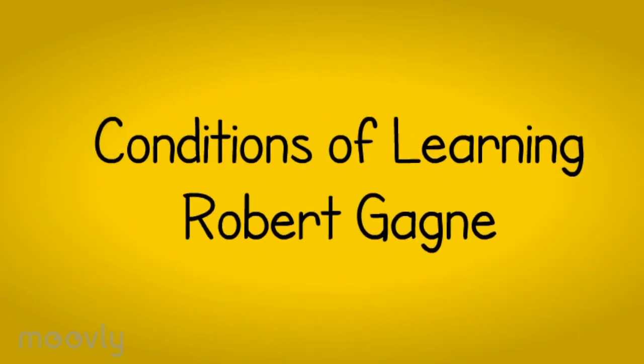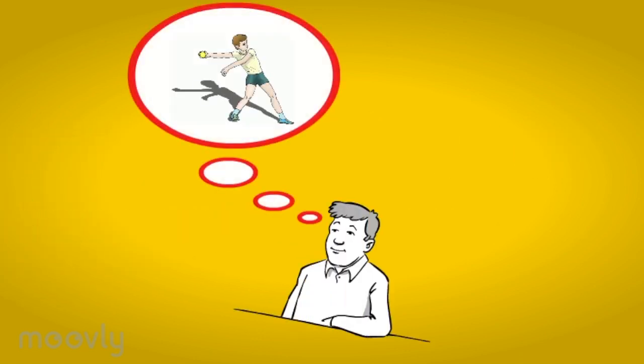The Conditions of Learning by Robert Gagne. You've probably never thought about how someone learns to throw a ball, or how a child learns to write. They are very different skills, but the steps in learning them are quite similar and have been theorized by Robert Gagne's Conditions of Learning.